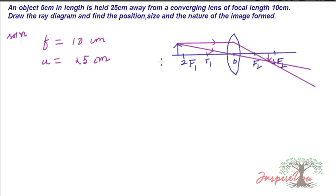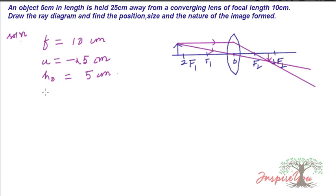The object is placed in front of the lens, so by sign convention, object distance is negative: u equals minus 25 centimeters. Height of the object h_o is equal to 5 centimeters. We need to find: v (image distance), and height of the image.